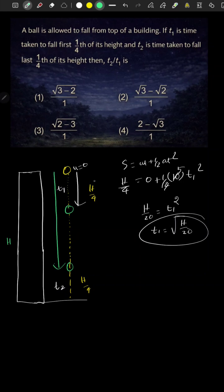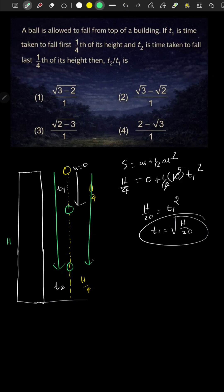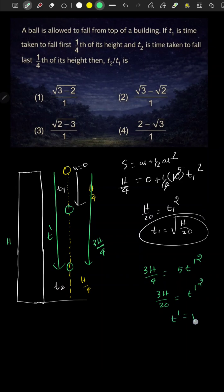The first portion is h/4, and the next portion is also h/4. The gap in between — the total remaining height — is 3h/4. So 3h/4 = 5t2². Therefore, 3h/20 = t2², and t2 = √(3h/20).